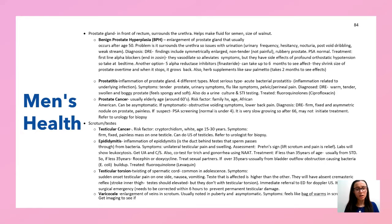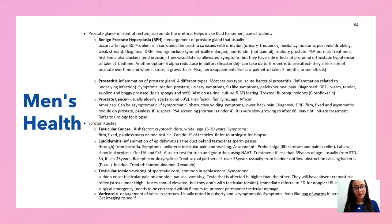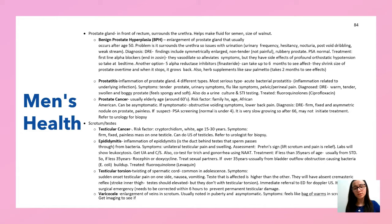Testicular cancer is more common in younger patients — screen between ages 15 and 50. It presents as a firm, fixed, painless mass on one testis. Do ultrasound and refer to urology for biopsy. Epididymitis is inflammation of the epididymis. If the patient is under 35, assume it's STD-related — treat with rocephin and doxycycline. Over 35, it's usually from bladder obstruction and bacteria — treat with fluoroquinolones.